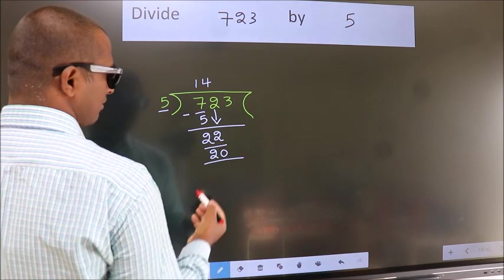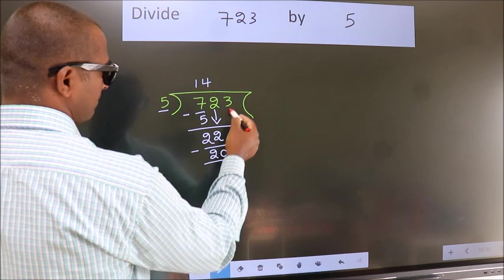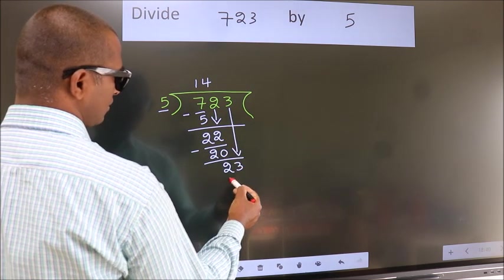Now we subtract. We get 2. After this, bring down the beside number. So 3 down, so 23.